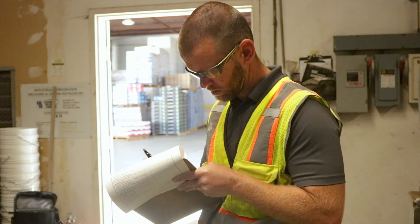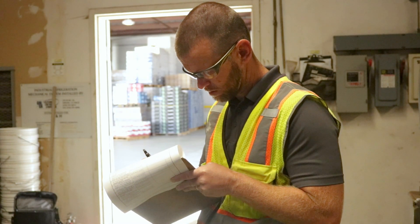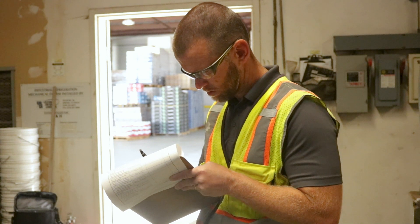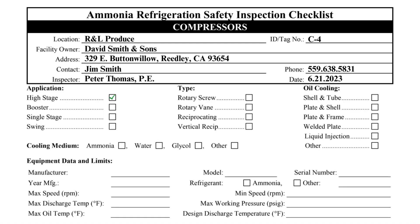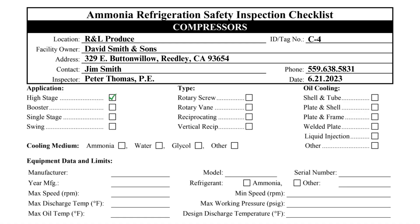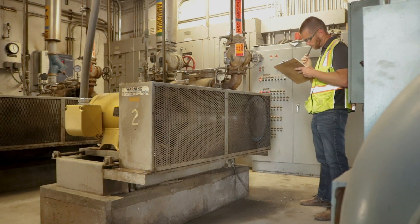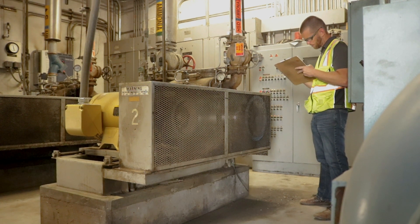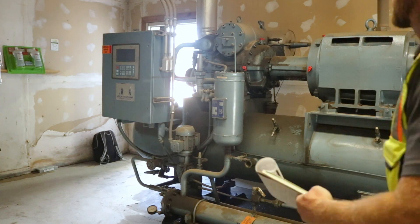Next, the inspector should indicate on the inspection checklist the application of the compressor. This compressor is a high-stage compressor, so the appropriate box should be checked. The type of compressor must also be indicated by checking the appropriate box. In this video, we will provide examples of inspecting both reciprocating and rotary screw compressors.